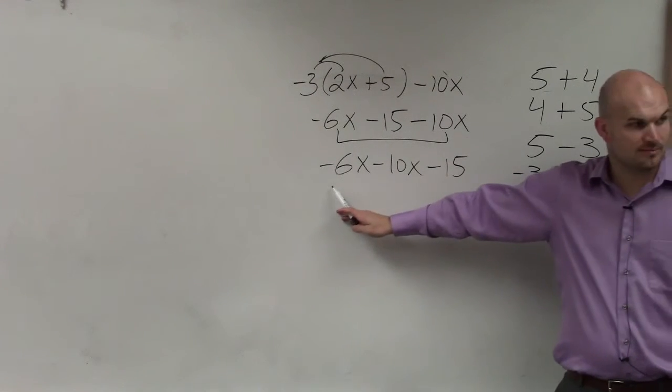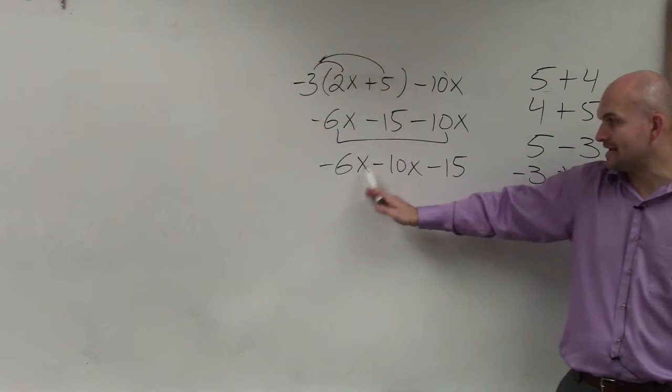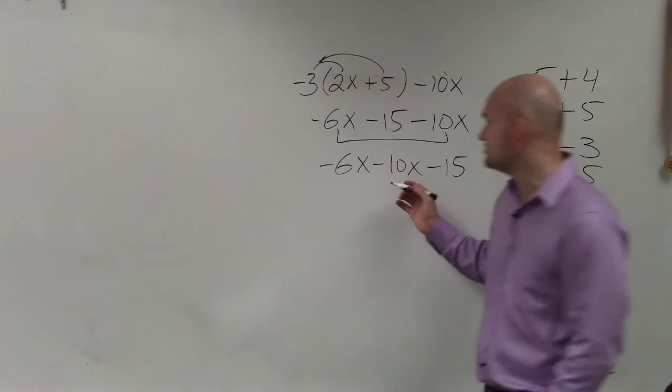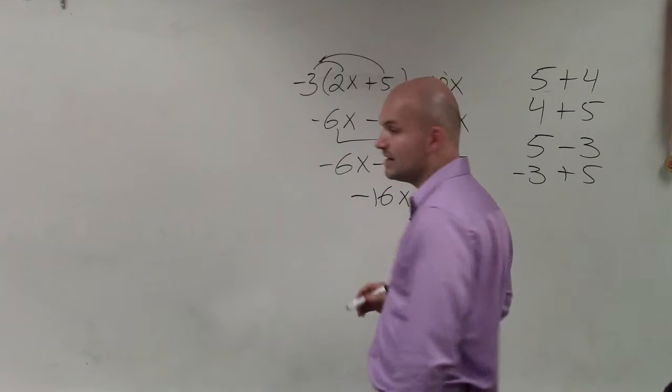Now, these are like terms, right? So we keep the like term, which is just x. Negative 6x minus 10x is going to be a negative 16x minus 15.